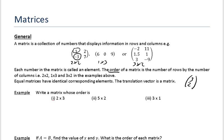OK, this one says write down a matrix whose order is 2 by 3. It doesn't specify anything else about it. So you can just write down any matrix at all which has got two rows and three columns. So what I have done here, I just put any numbers at all in.